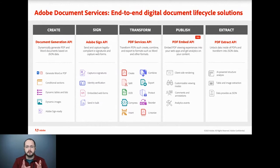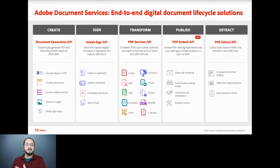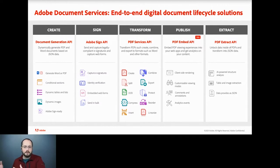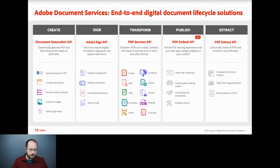What we're going to focus on is the Adobe Sign API, but each one of these services is very complementary to each other. Document generation can help support Adobe Sign by creating and passing documents to it. PDF Embed API can support Adobe Sign by letting you present signed documents on a website. PDF Extract API is helpful if you want to pull information out of signed documents. And PDF Services can give you document properties or help assemble PDFs before passing them to Adobe Sign.